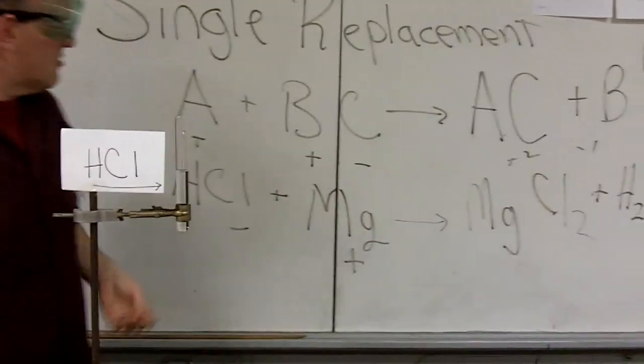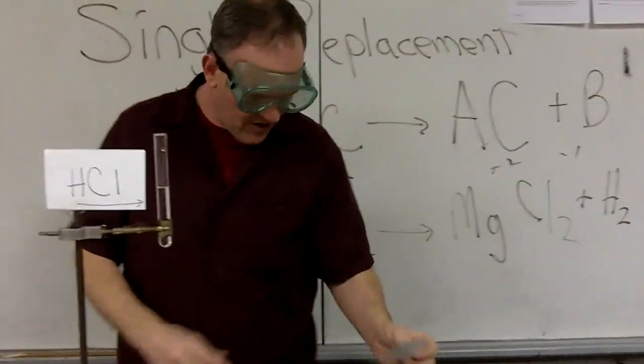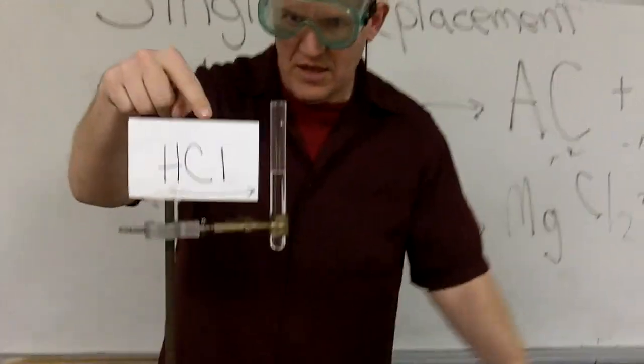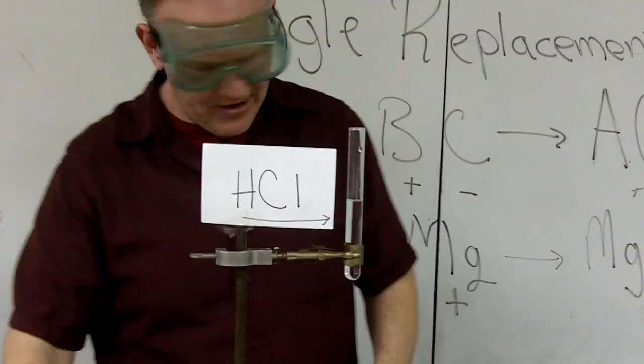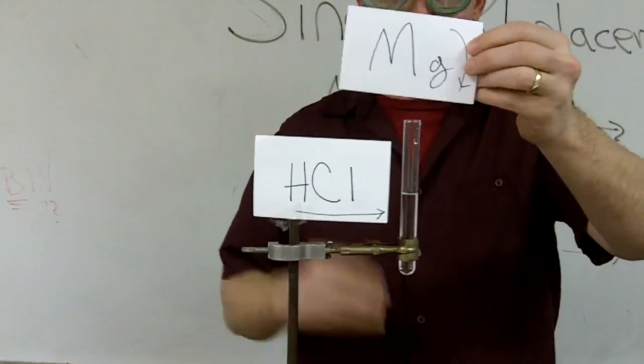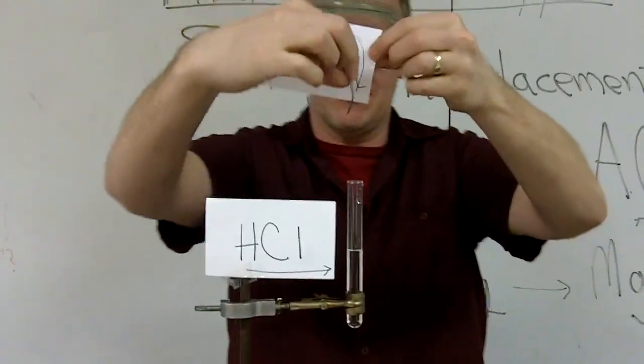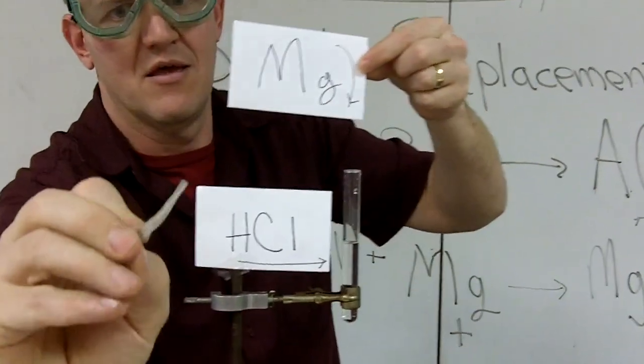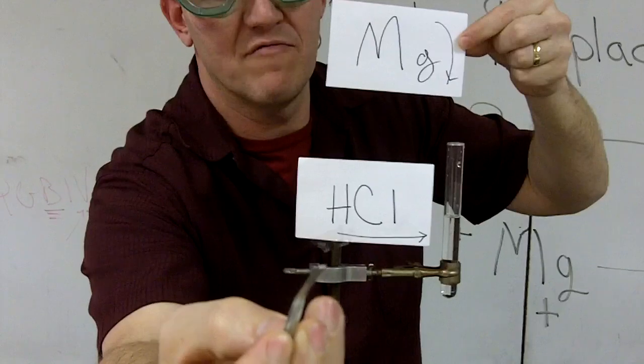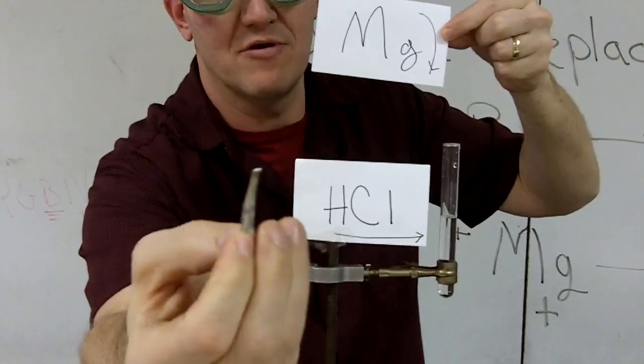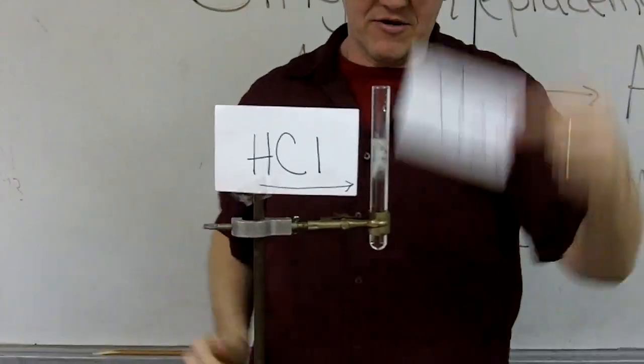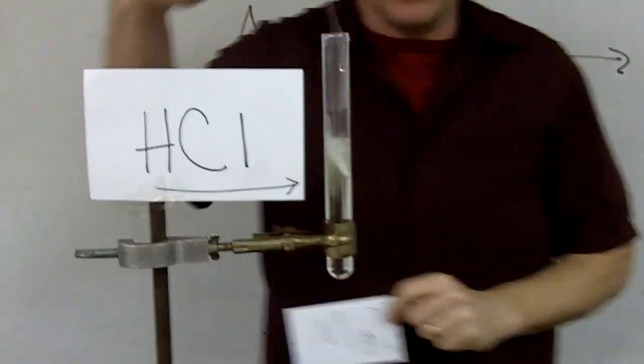So what would this actually look like? Well, I have a little example here. Here we have some HCl dissolved into the water here. And I can actually take some magnesium. Here's the magnesium. And I'm going to put the magnesium. Magnesium is a bright, silvery, this is in ribbon form. It's just a metal, like a ribbon. And we're going to take the magnesium, we're going to plop it in here.